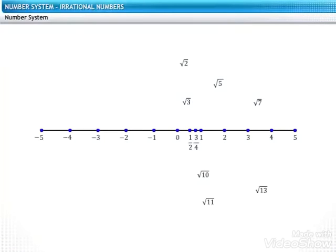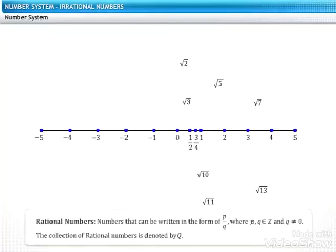To understand an irrational number, we'll recall the definition of rational numbers. Numbers that can be written in the form of p upon q, where p and q are both integers and q is not equal to zero are called rational numbers. The collection of rational numbers is denoted with the letter Q.